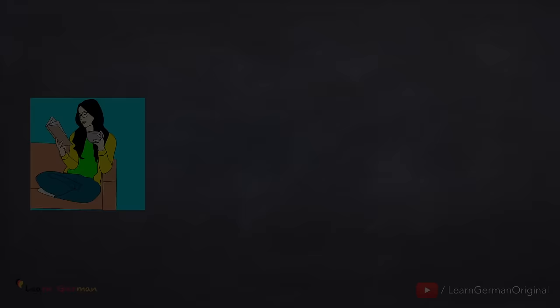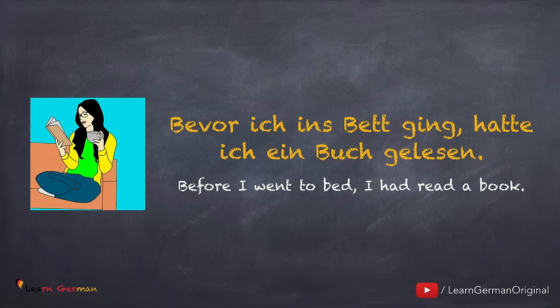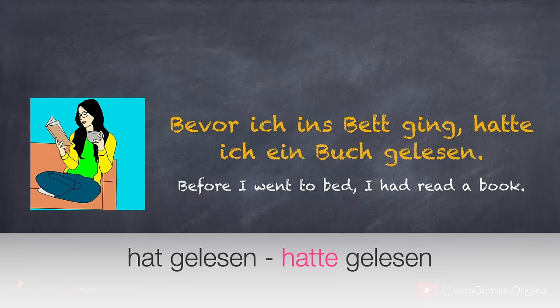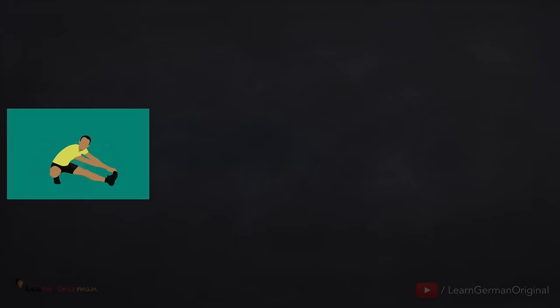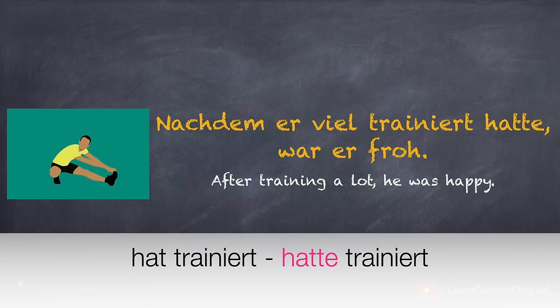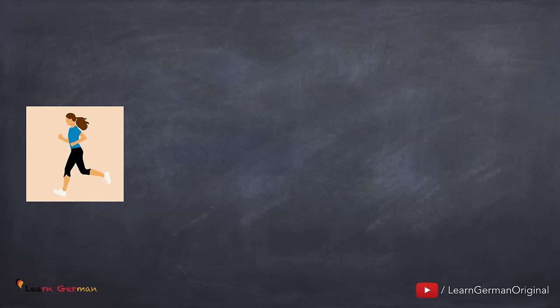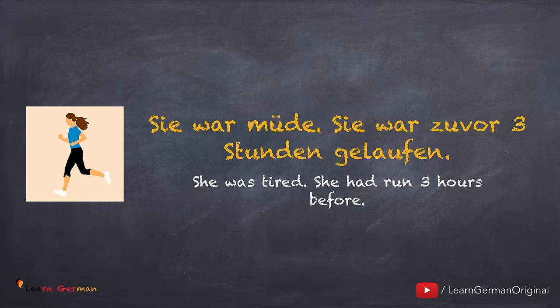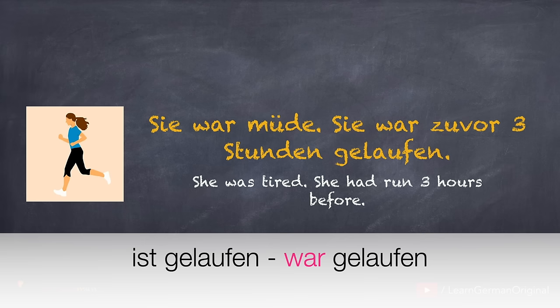Das kann man in diesen Beispielen sehen. Bevor ich ins Bett ging, hatte ich ein Buch gelesen. Instead of hat gelesen, we use hatte gelesen. Nachdem er viel trainiert hatte, war er froh. Instead of hat trainiert, we use hatte trainiert. Sie war müde. Sie war zuvor drei Stunden gelaufen. Instead of ist gelaufen, we use war gelaufen.